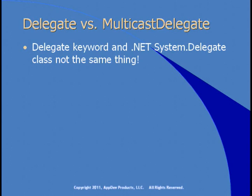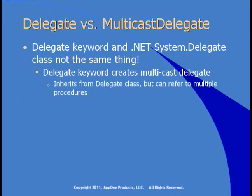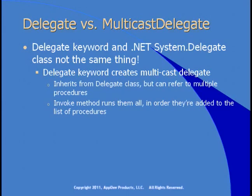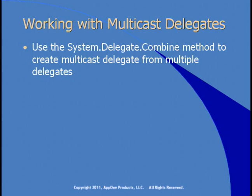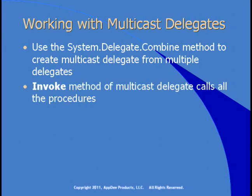It's important to understand that the delegate keyword and the .NET system.delegate class aren't really the same thing. The delegate keyword creates a special multicast delegate, which inherits from the delegate class but can refer to multiple procedures — giving them more flexibility. The invoke method runs all the procedures associated with this delegate in the order they're added to the list. All instances of a delegate, in general, should return no value back — otherwise, which value would be returned when invoke calls each of those procedures in turn? The last one? The first one? Who knows?